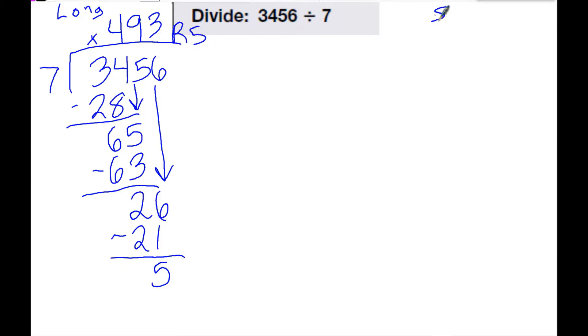Now to do that with short division, we're following the same steps. I just don't write it out in a big long string. So I'm going to rewrite it. 3,456 divide by seven. This one's going to help if I make it a little bit bigger so you can see it better.